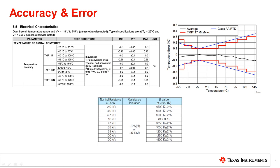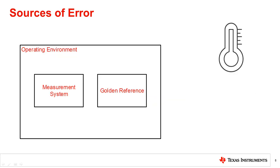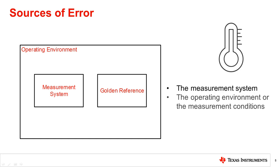Even though a sensor can have high accuracy within 0.1°C typically, there are external effects which may introduce errors in the accuracy. It is important to be able to distinguish these errors when testing a temperature sensor in a system. There are three main sources of errors when sensing temperature: the measurement system, the operating environment or measurement conditions, and the golden reference. The reference refers to the source of measurement which the temperature sensor is being compared against.